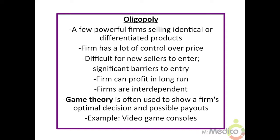An oligopoly exists when we have a few powerful firms selling identical or differentiated products. A firm in an oligopoly has considerable control over the price. It's very difficult for new sellers to enter the market because there are significant barriers to entry, such as economies of scale. A firm can even profit in the long run.